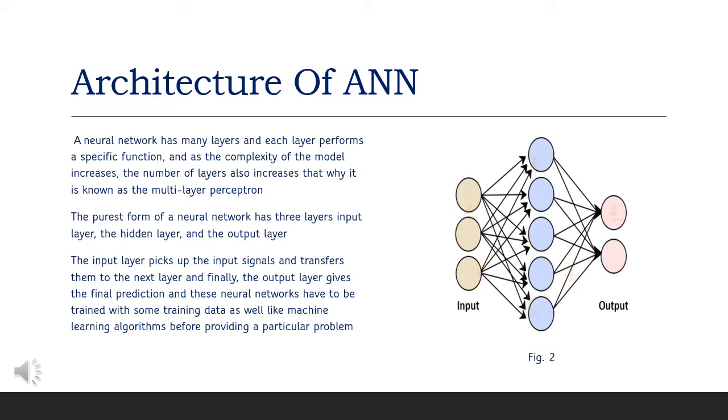The purest form of such neural network can have only three layers, which may include input, output, and one hidden layer, which is the most basic artificial neural network.